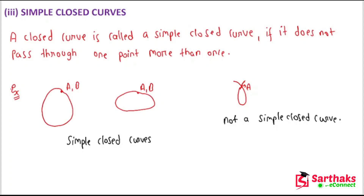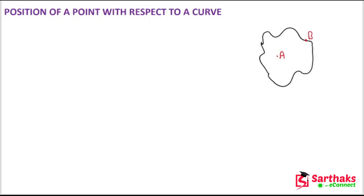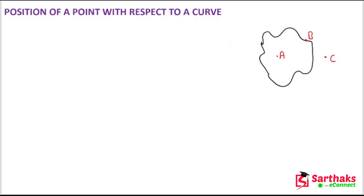So these are the concepts of open curves, closed curves, and simple closed curves. Now let us talk about the position of a point with respect to a curve. If I draw a curve and mark three points — let the first point A be inside the curve, the second point B be on the boundary of the curve, and the third point C be outside the curve.